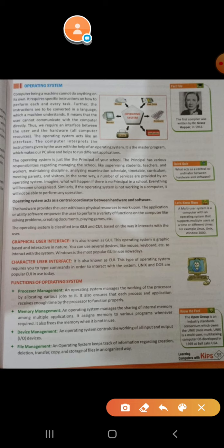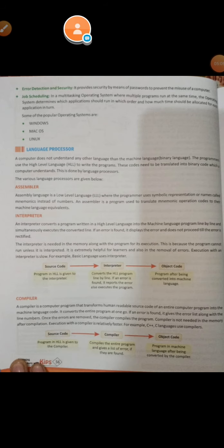For processor management, the operating system manages the working of the processor by allocating various jobs to it — the OS allocates different tasks to the CPU and manages how it performs them. For memory management, the OS manages the computer's memory by allocating space to files based on their size. For device management, it manages input and output devices — how the keyboard works, how the printer works. File management: the operating system keeps track of information regarding creation, deletion, transfer, copy, and storage of files.